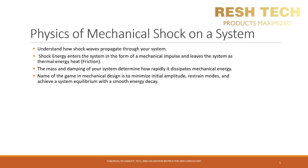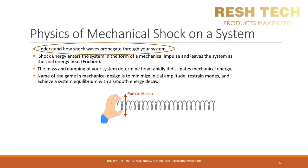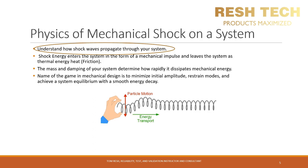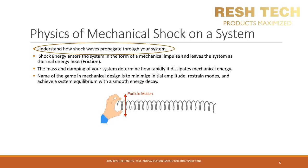A critical parameter you need to understand for your system is how shock waves propagate through your system or structure. Understanding the direction of the energy, the system's mass, the materials used, the thickness and rigidity of the system, and the system damping will allow you to assess the amplitude of the shock wave impact, how quickly the energy will decay or dissipate as it travels through your system, and the impact of stress from the shock wave such as immediate damage, fatigue, and overall functional or structural system degradation.